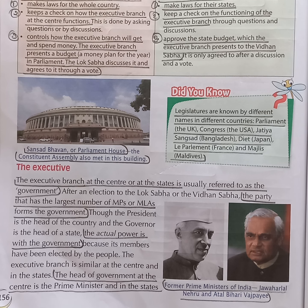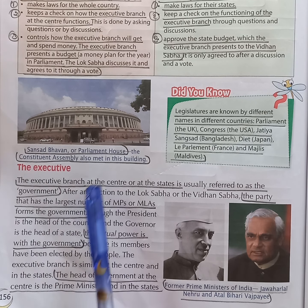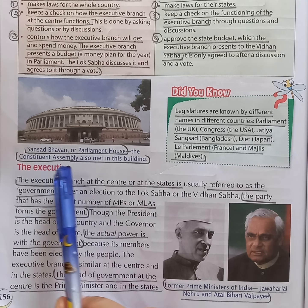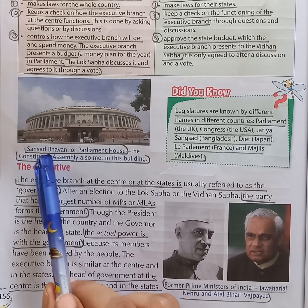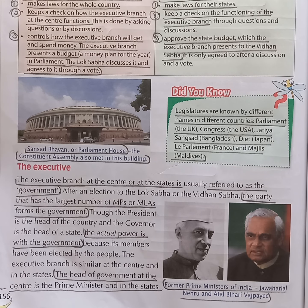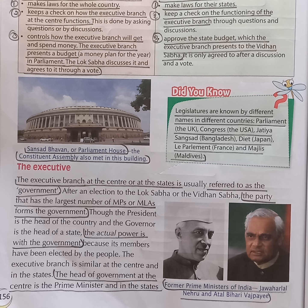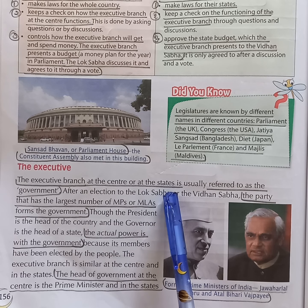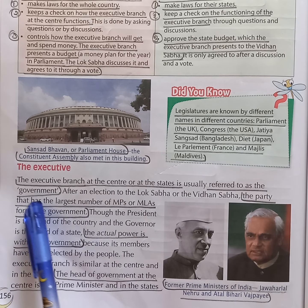Where did the Constituent Assembly meet? Answer: the Constituent Assembly met in Sansad Bhavan or the Parliament House. Which branch is known as the Government? Answer: the Executive Branch at the centre or at the states is referred to as the Government.